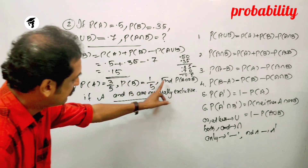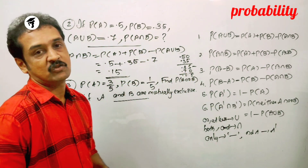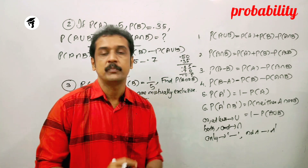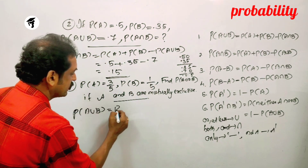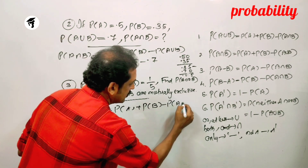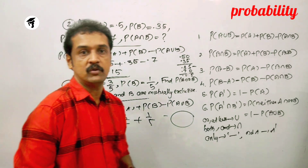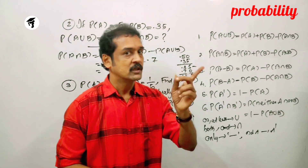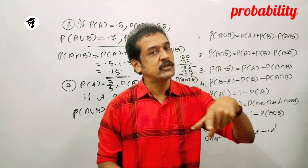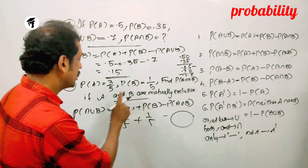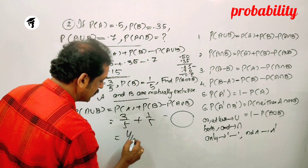Next: If P of A is 3 by 5, P of B is 1 by 5, find P of A or B, given that A and B are mutually exclusive. If A and B are mutually exclusive, then P of A intersection B is equal to 0. Therefore, P of A union B equals 3 by 5 plus 1 by 5, which becomes 4 by 5.